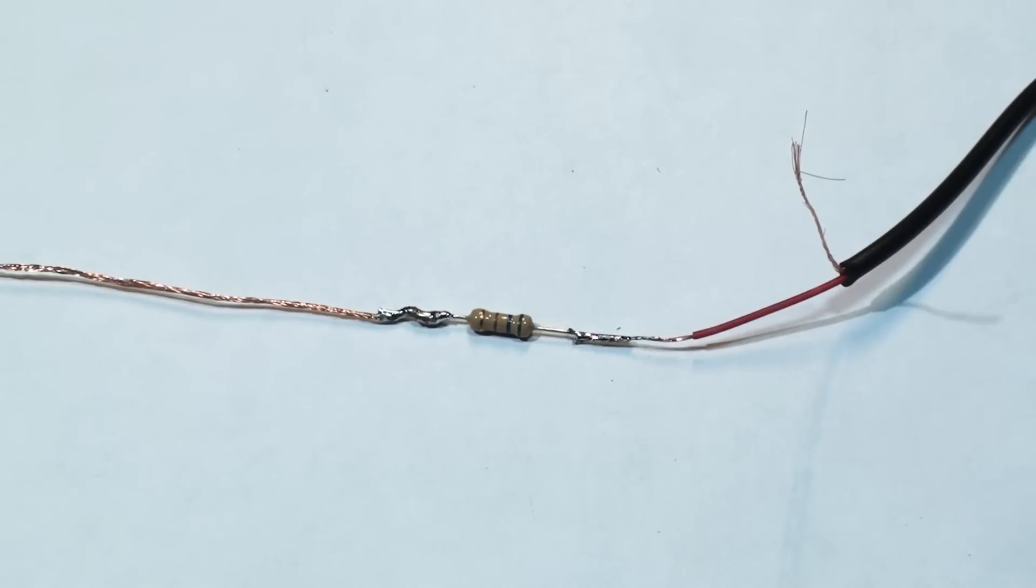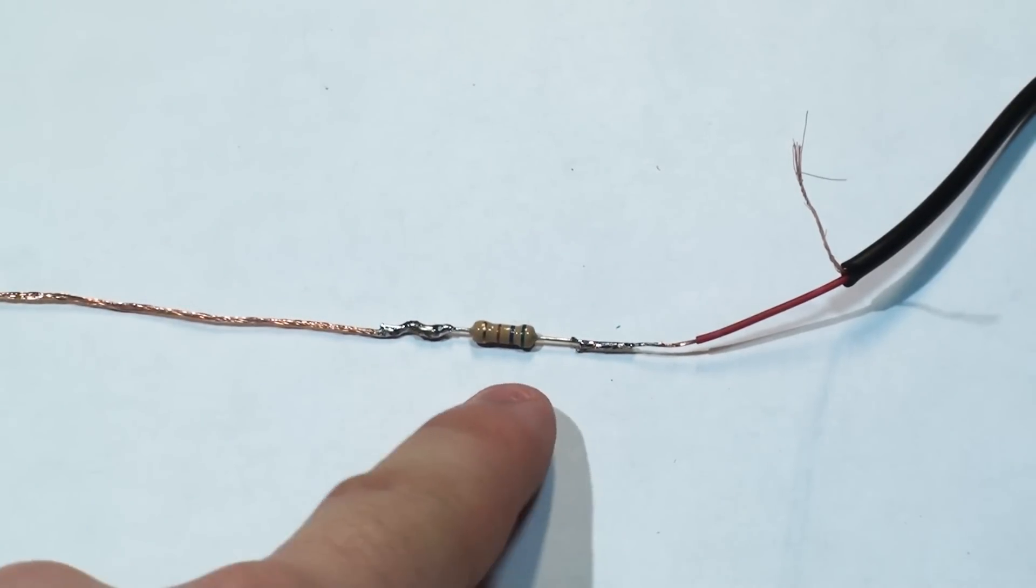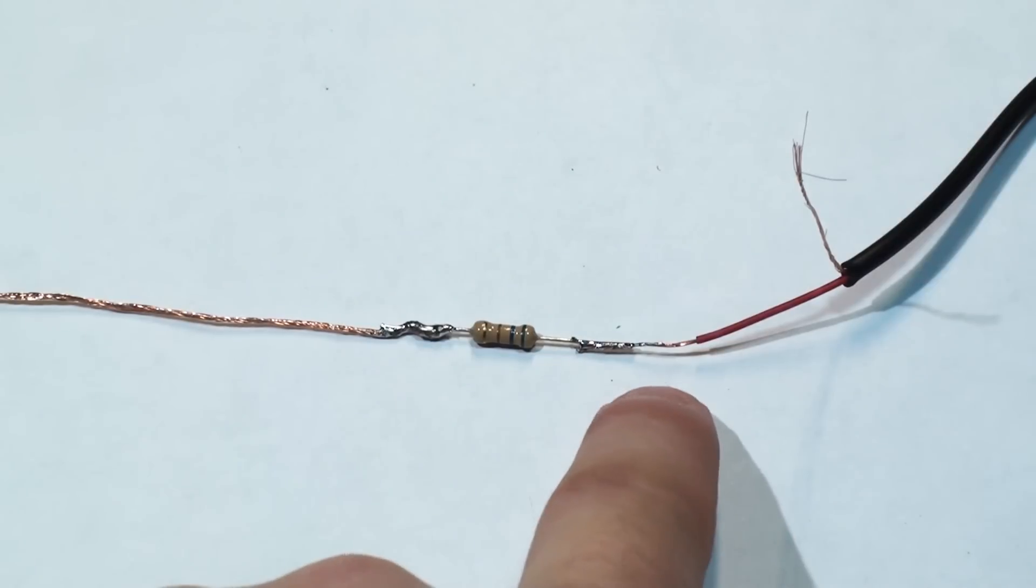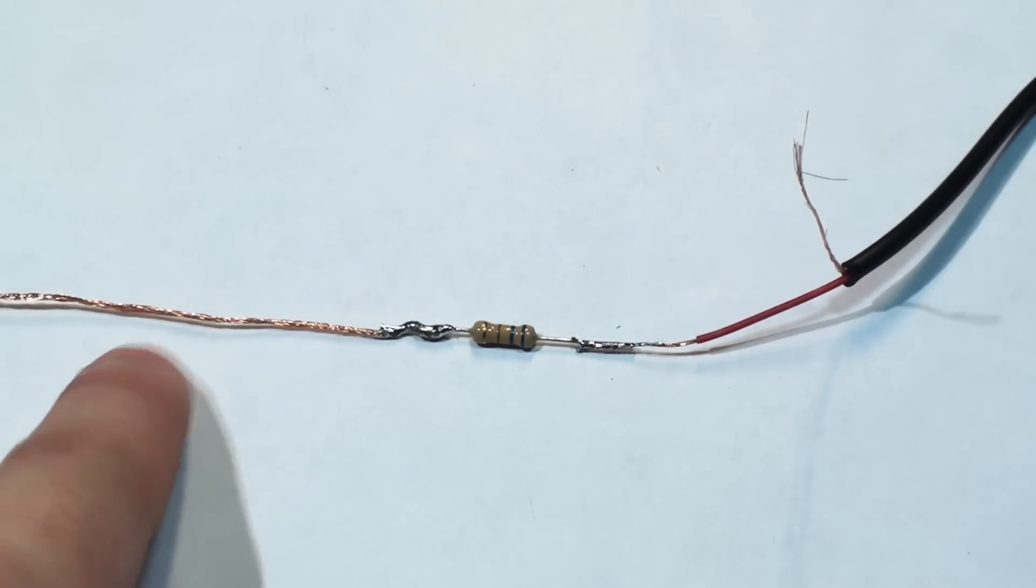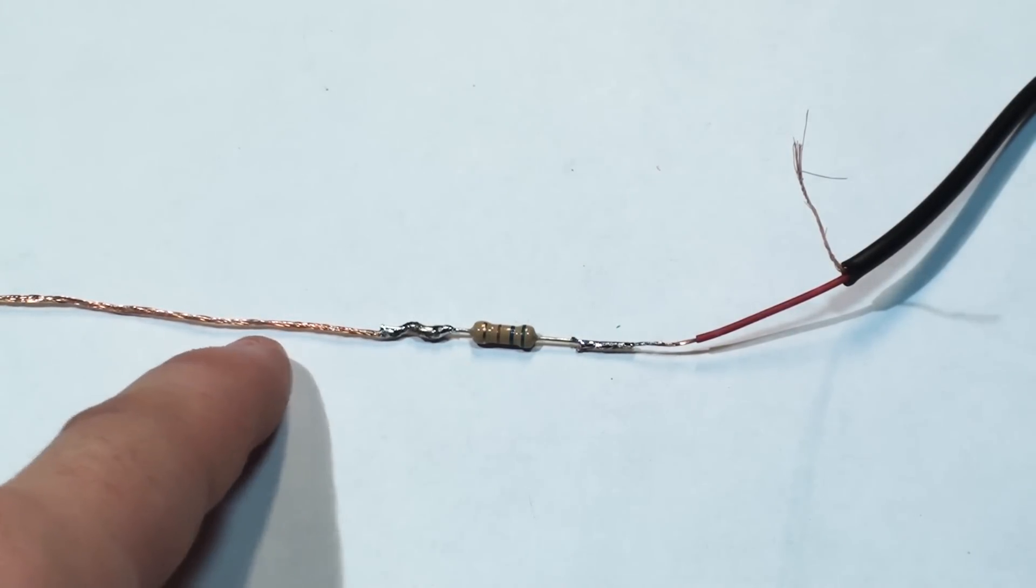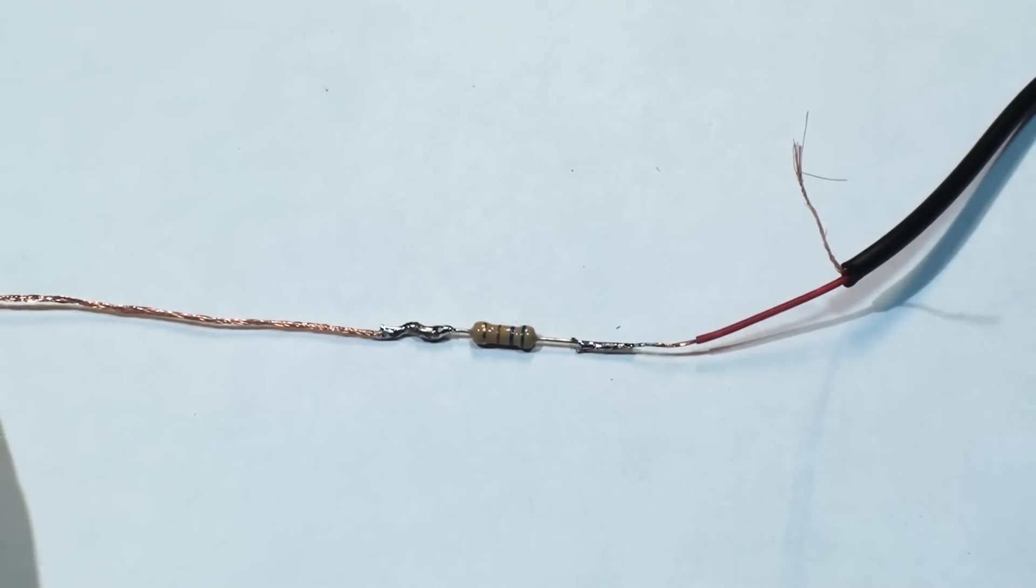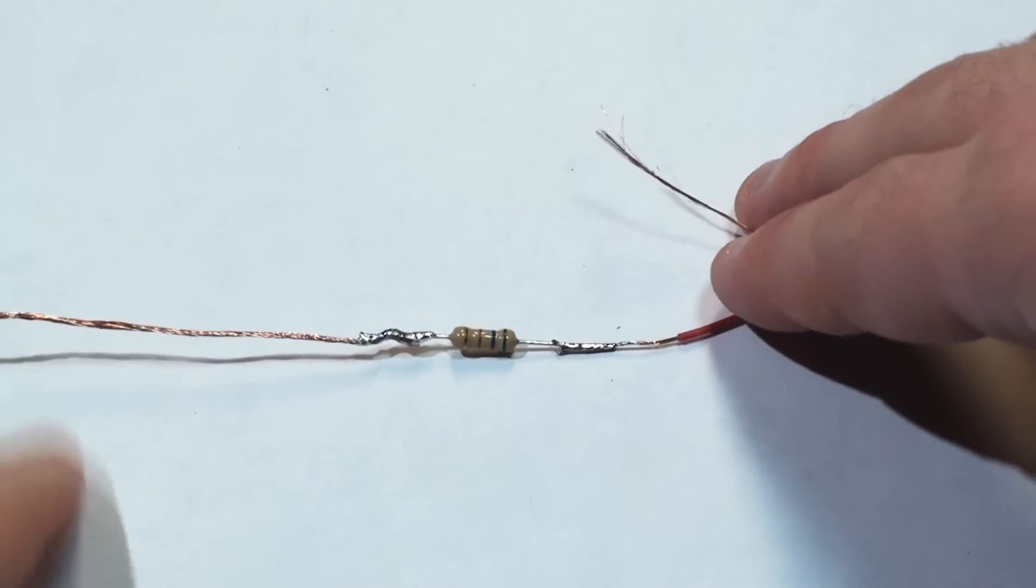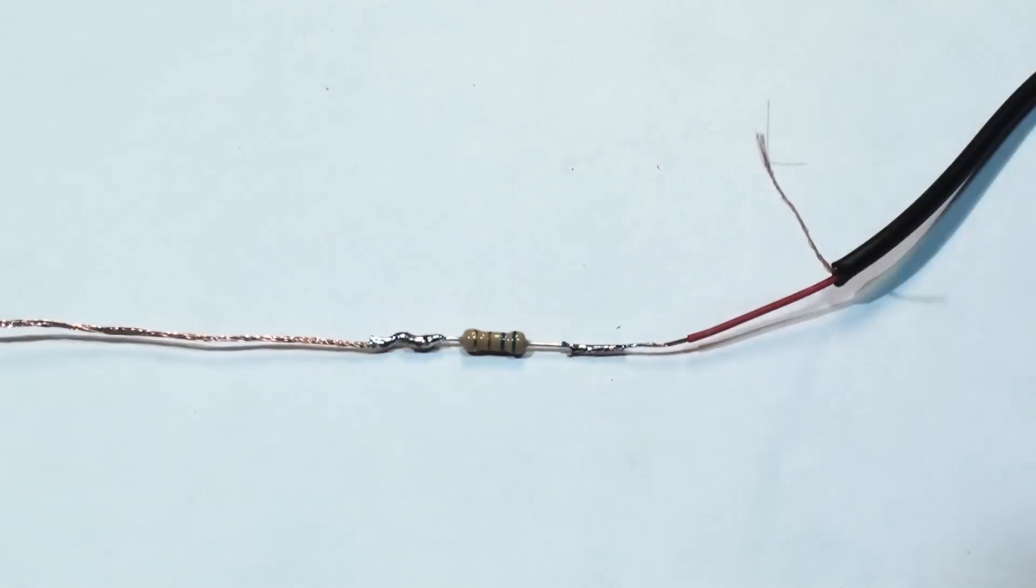What I did was I soldered one end of our resistor to our extension cable coming off our power supply. Then I took the wire that we stripped and soldered it to the other end of our resistor. This is our positive or hot wire that we're going to be using to power our LED. Now, take your other stripped wire and solder it to our negative leg. You do not need to solder another resistor.